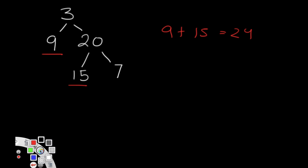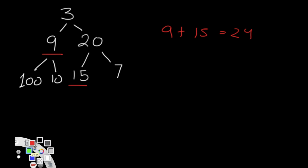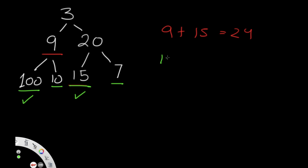To show another example, let's say we add 100 here and a value of 10 here. Now our leaves are going to be 100, 10, 15, and 7. We only add the left ones, so in this case 100 and 15. We do 100 plus 15 which equals 115. That's what the question means, and now let's see how we can solve it.